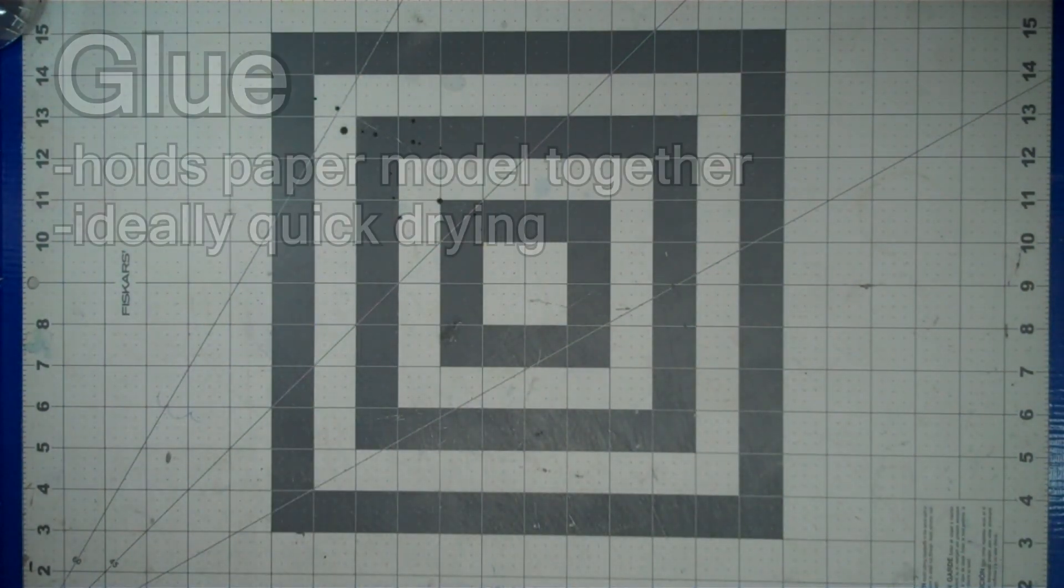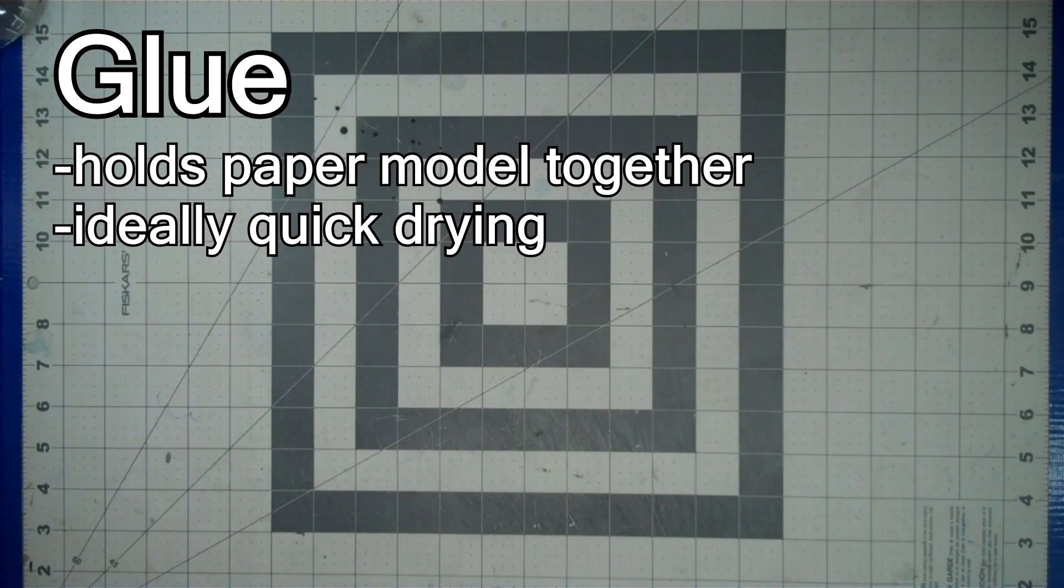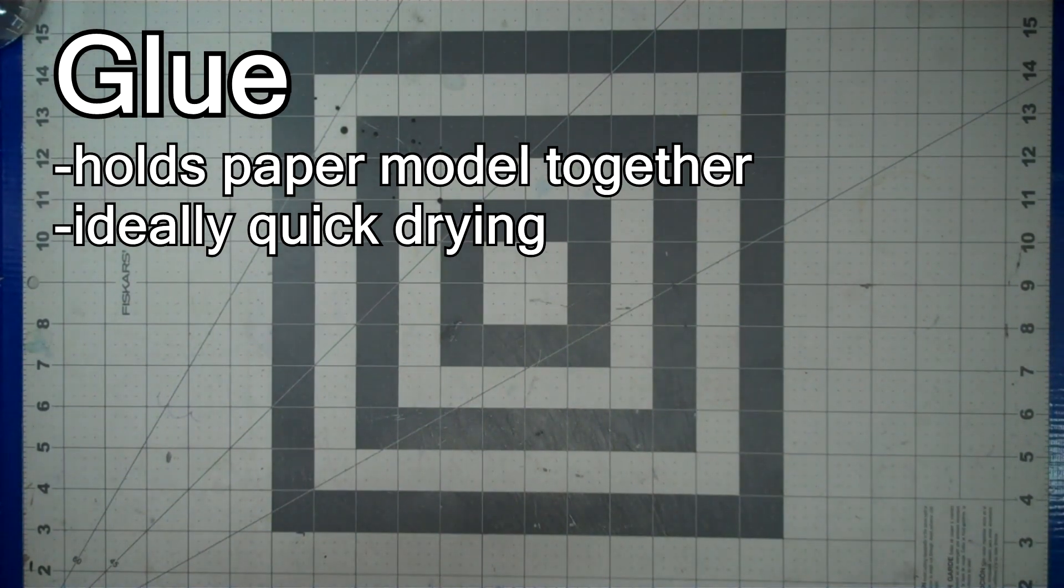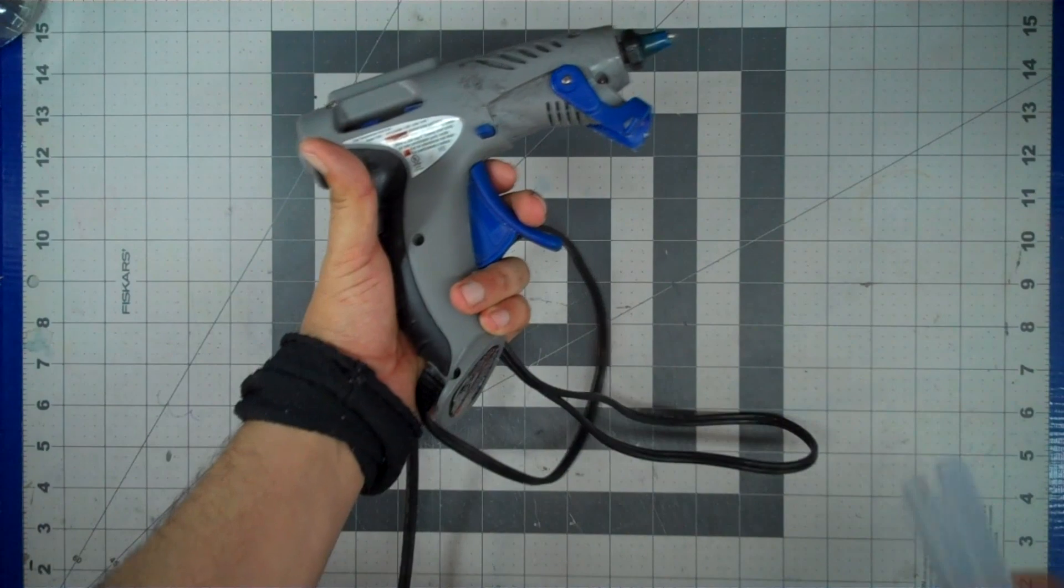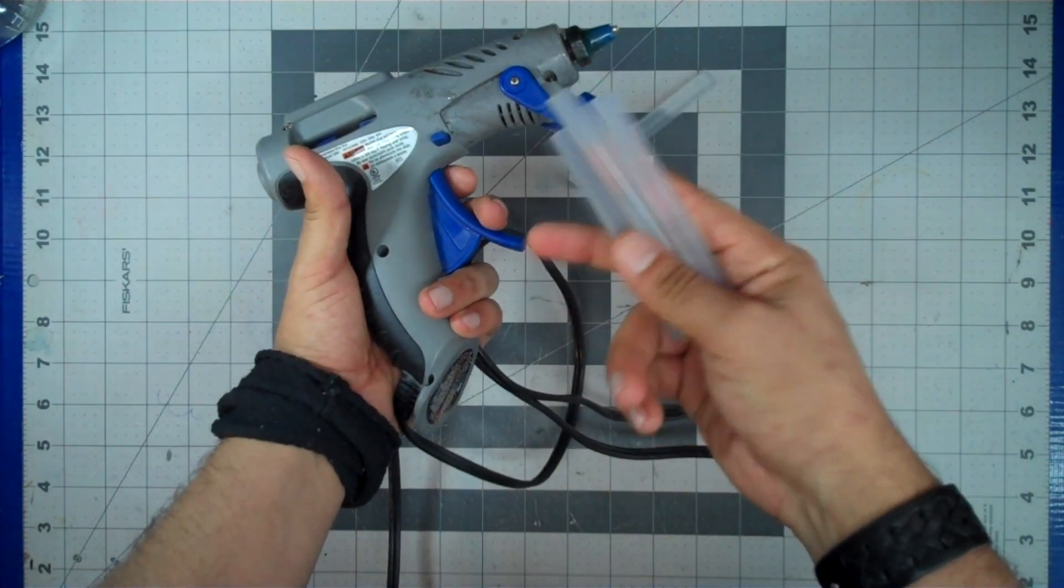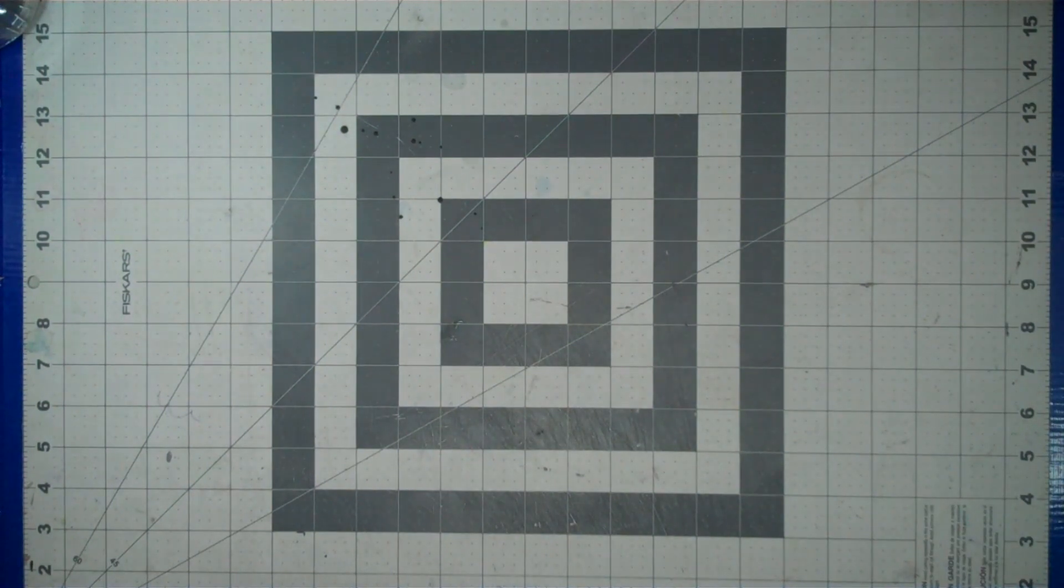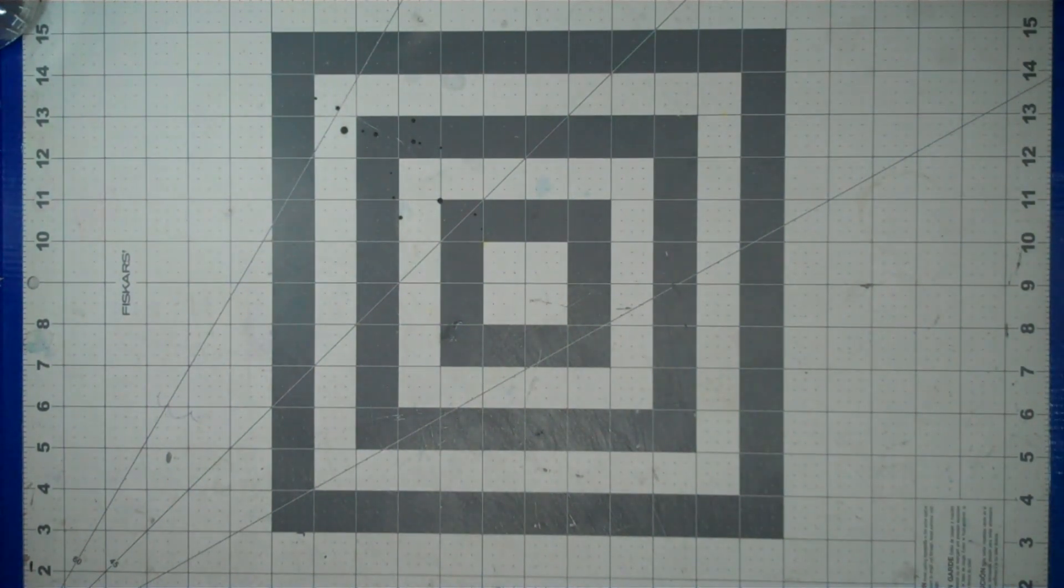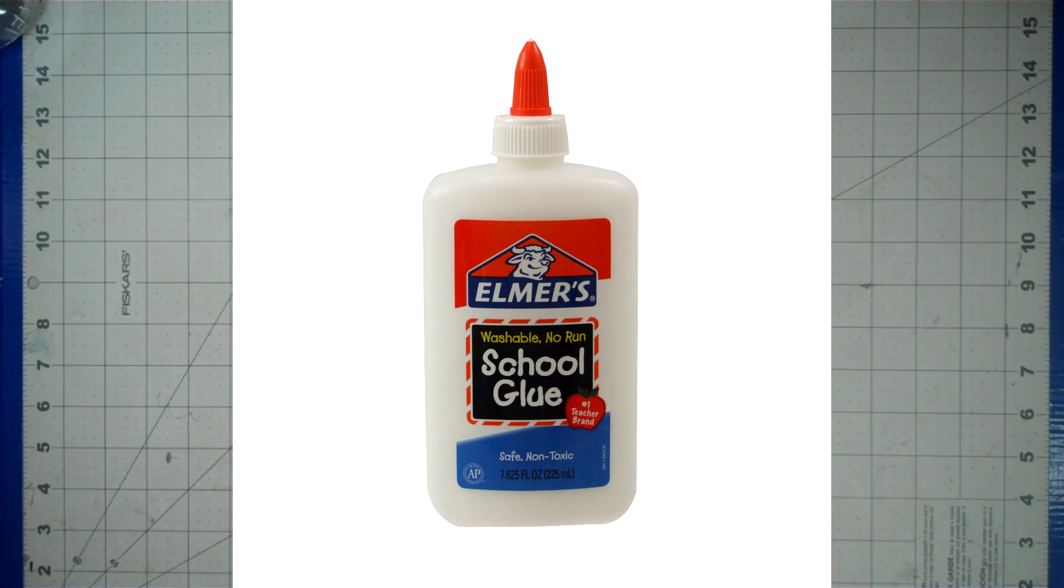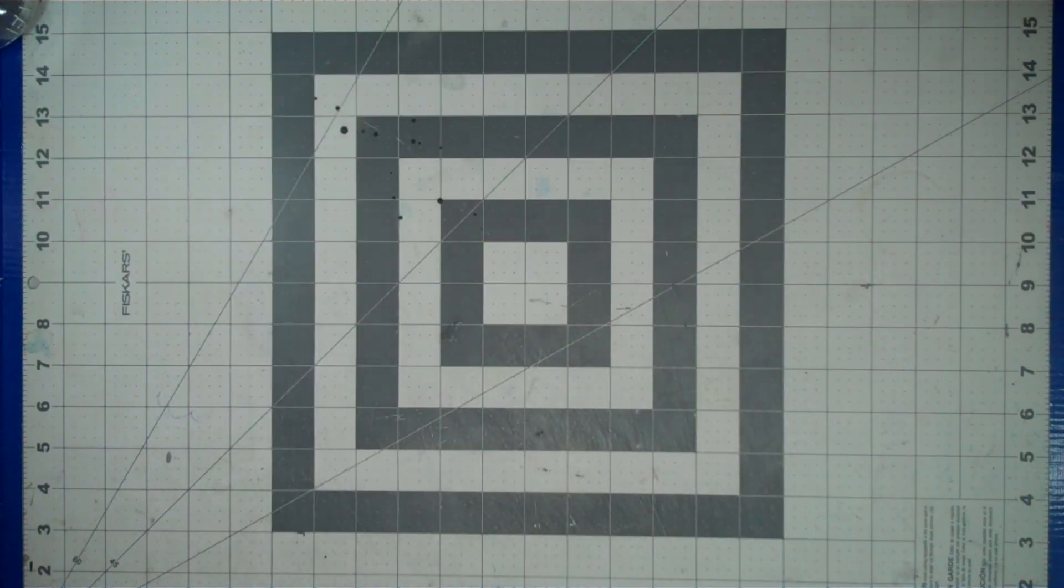Now, a glue of some kind is going to be required to hold the paper pieces together. And I recommend hot glue, due to availability and ease of use. Everyone's used a hot glue gun before, they're super easy to work with. But other glues are viable. If you want to use super glue or white glue, that's honestly up to you, it just comes down to personal preference.